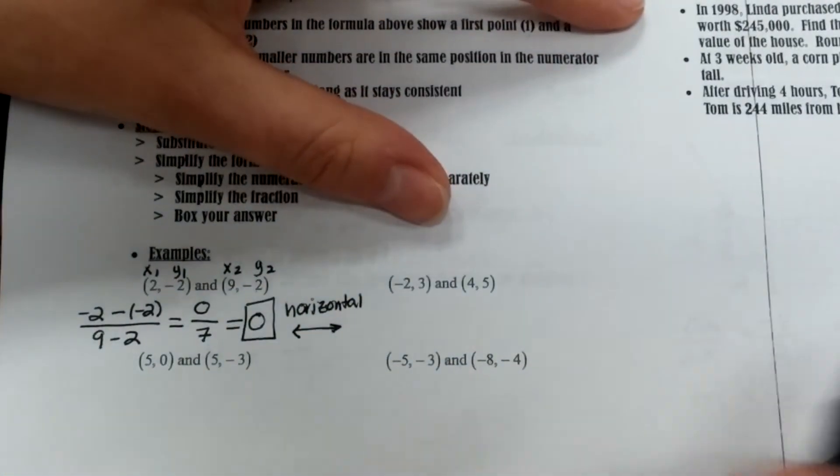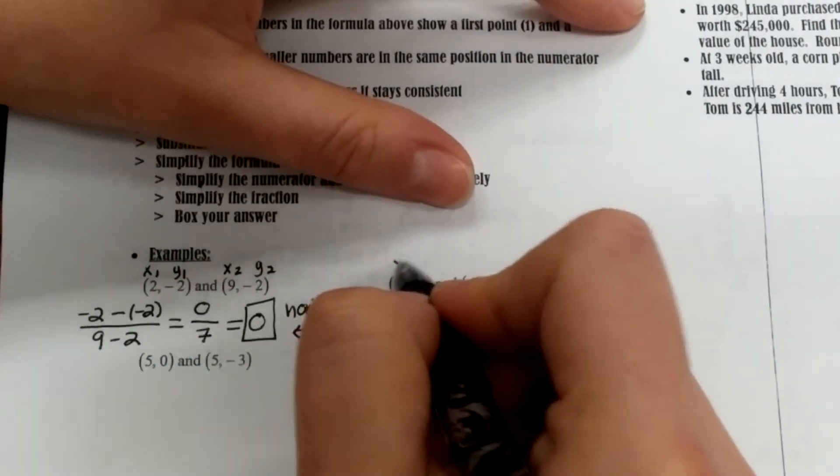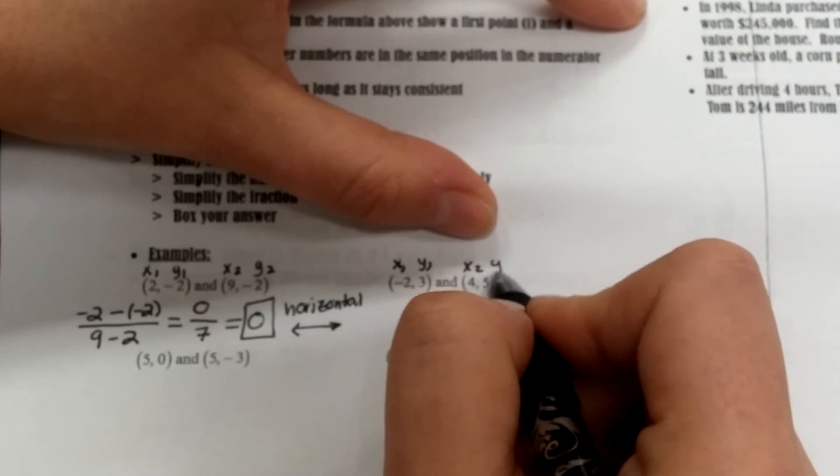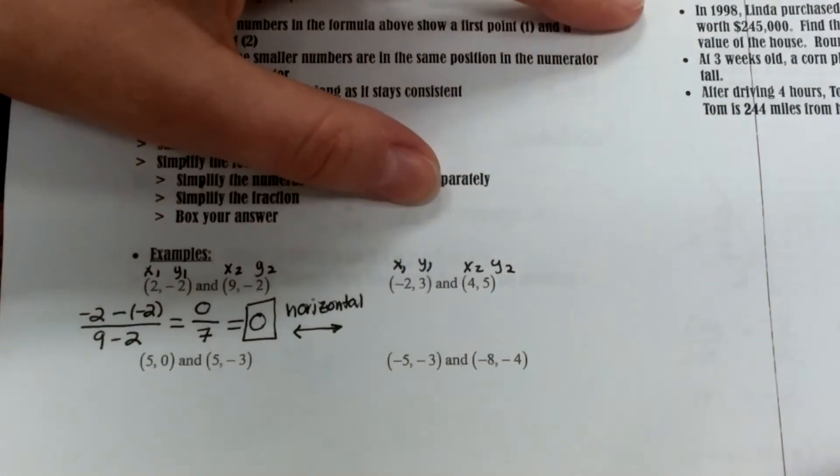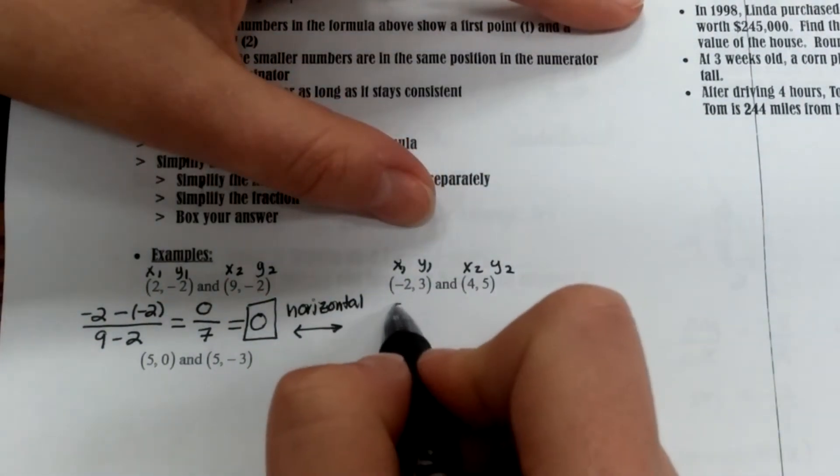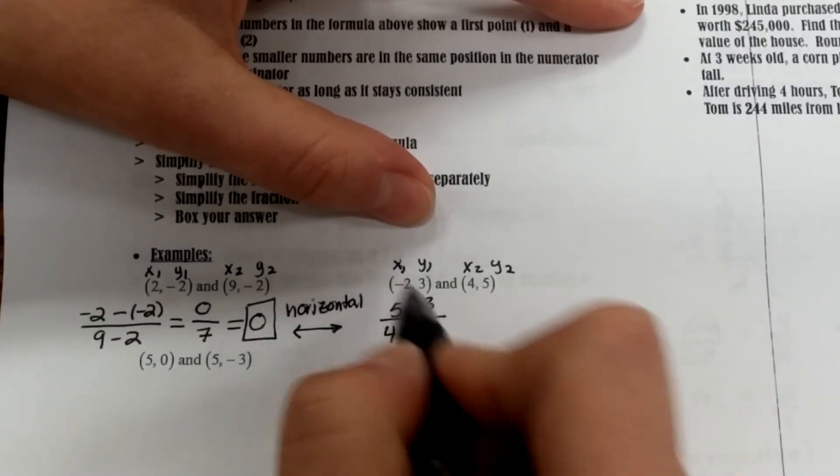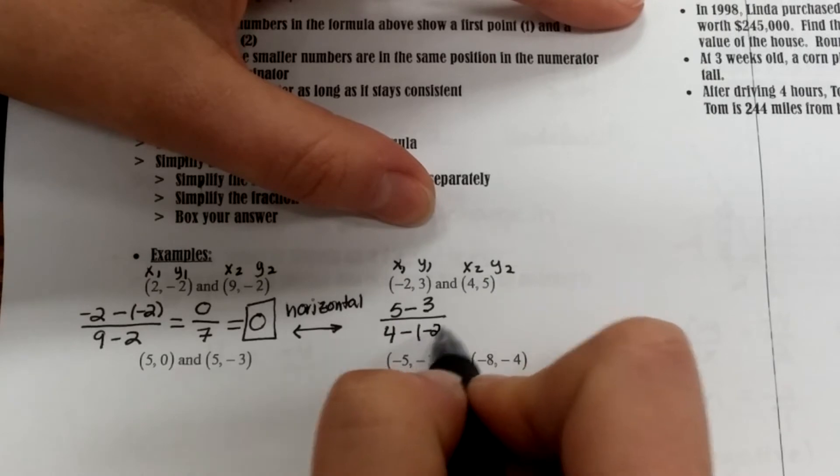Next example, same deal. I'm going to use this point as x1 and y1, and then x2 and y2. So I'm plugging in y2, which is 5, minus y1 is 3, over x2 is 4, minus y1 is minus a negative 2.